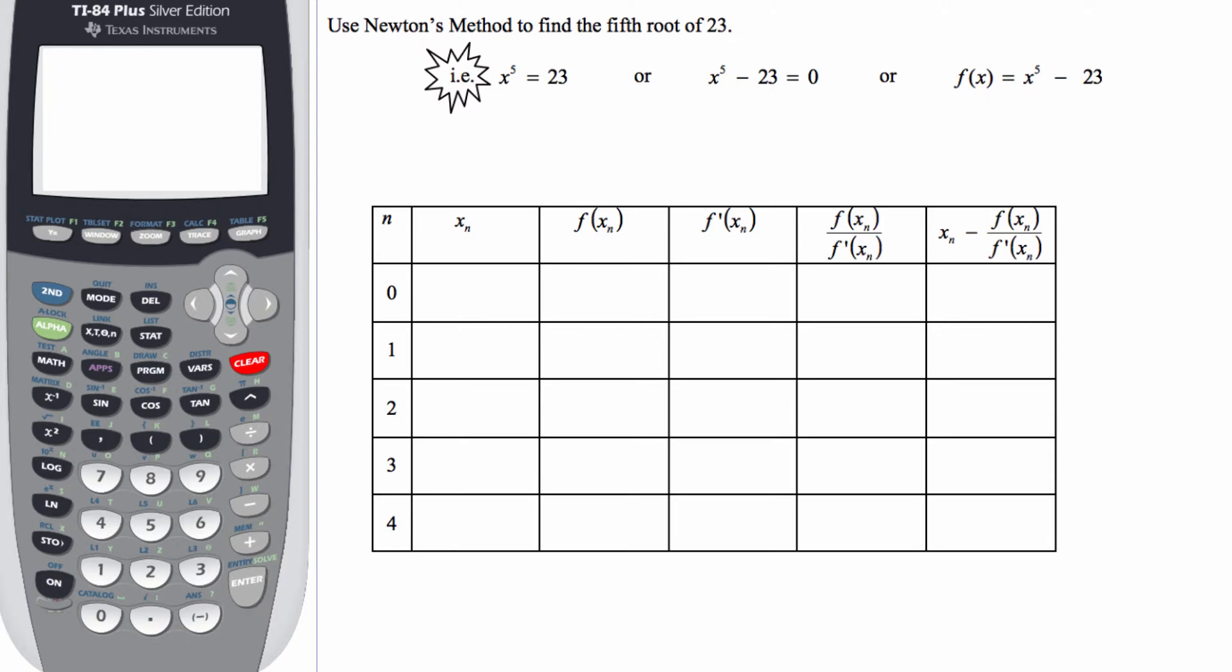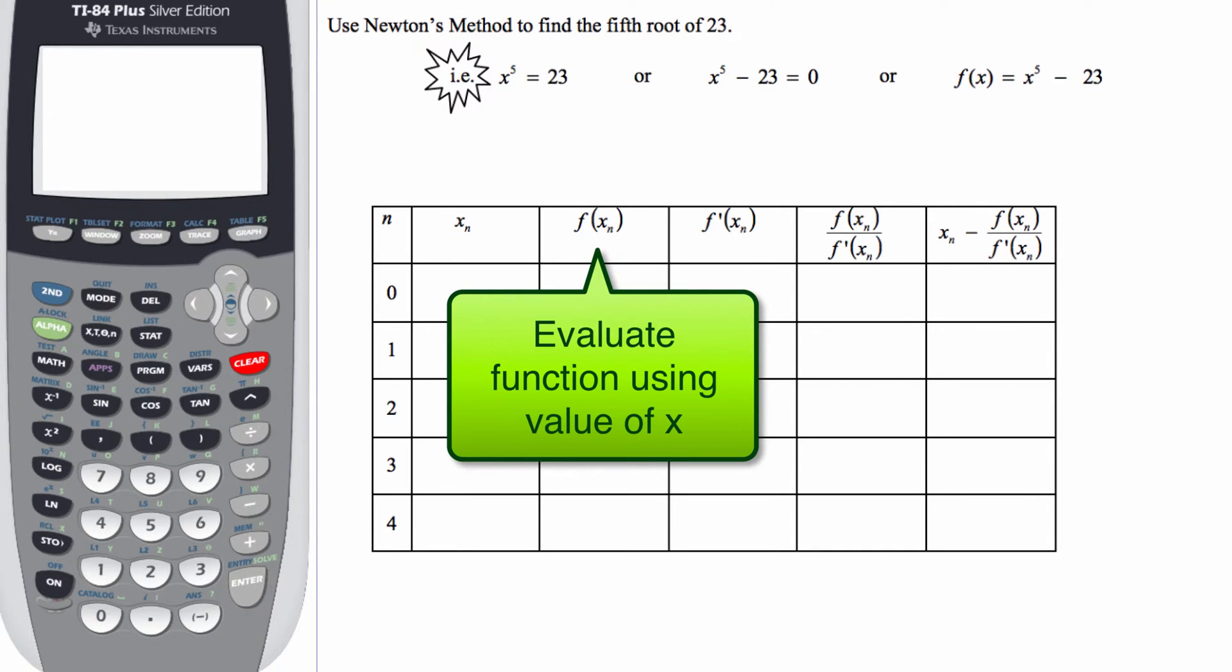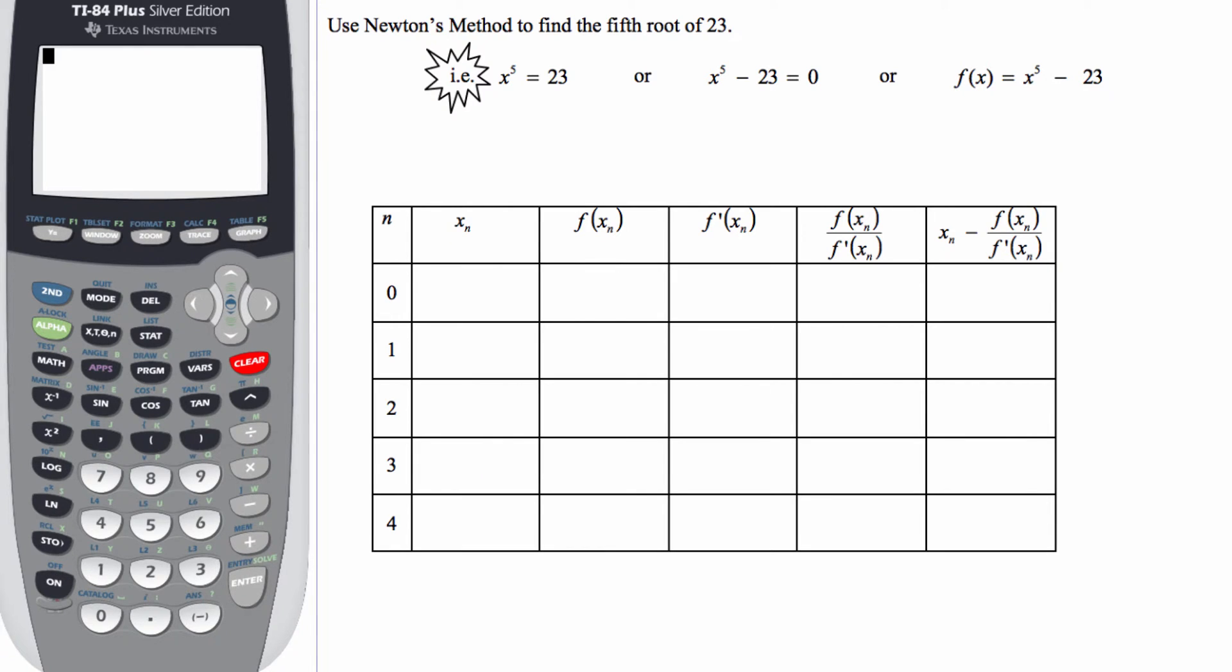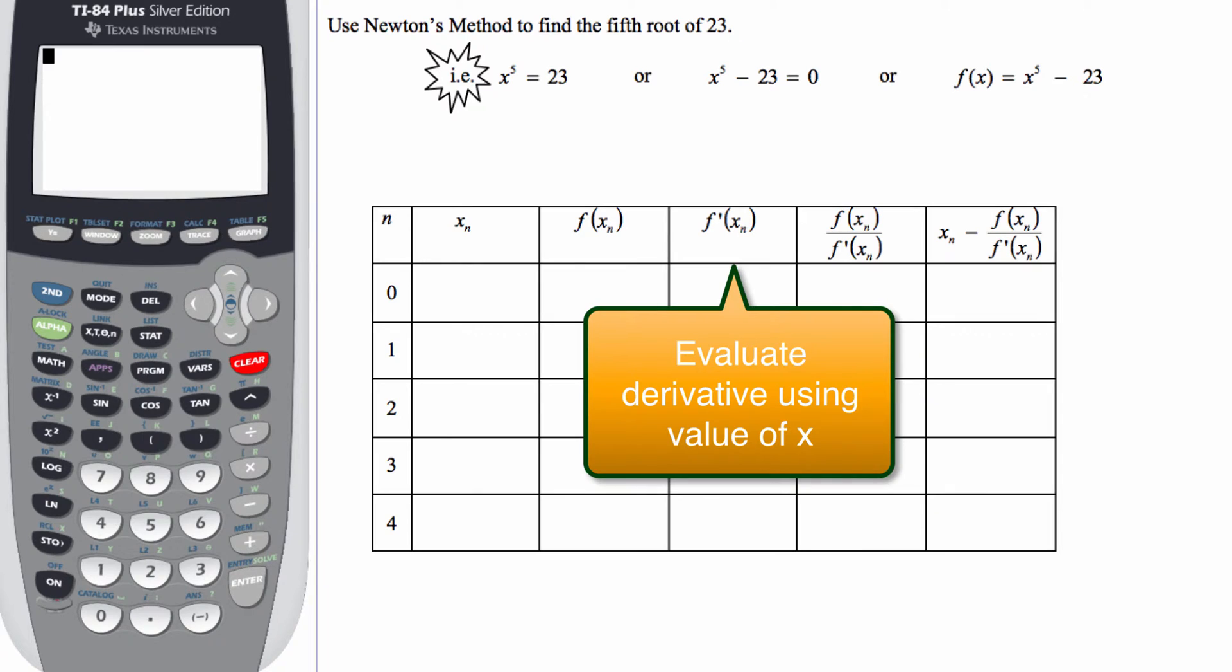Now, to work with this, what you're going to do is you're going to set up a chart similar to the one below. Now, the n column, that's just going to represent the number of iterations or guesses and tries that we're going to utilize for our approximation. The x sub n, that's going to be our x value. The column that has f of x sub n, that is going to be what we get when we plug in the x value to our function. And the f prime of x sub n, that's really going to be our slope at that particular x value.